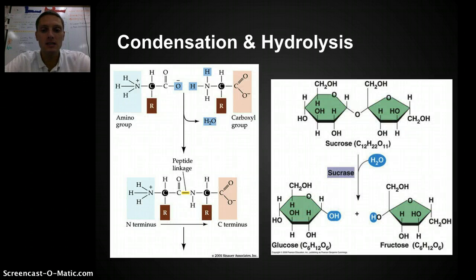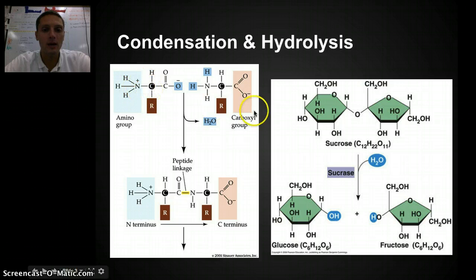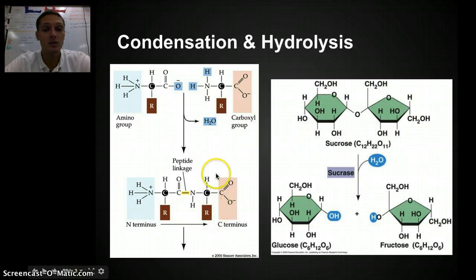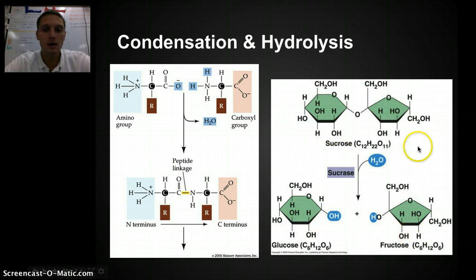We can take a look at what this looks like with some chemical formulas. In this example, we have an amino group and a carboxyl group, and we're putting two different amino acids together, bonding them by a peptide bond or peptide linkage. We've got our two small molecules, we're taking out water — this would be a condensation or dehydration reaction because we're releasing water. And here we've got a disaccharide of sucrose being split into glucose and fructose by the addition of water — a hydrolysis reaction.